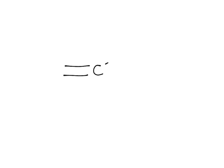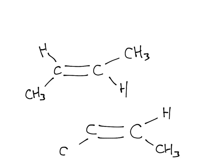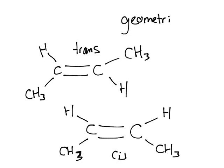You also have cis-trans alkenes. For example, if you have CH3 groups on opposite sides of the double bond, that would be trans, compared to having them on the same side, which would be cis. These are called geometric isomers, and they actually fall under the category of diastereomers. So a geometric isomer is a kind of diastereomer.